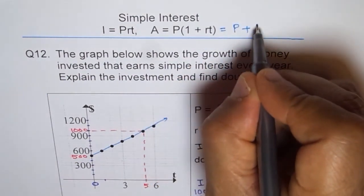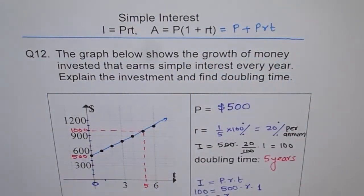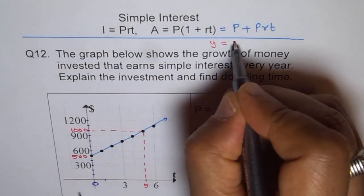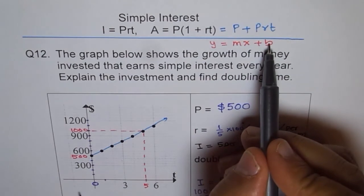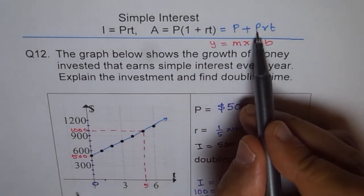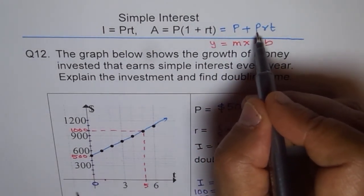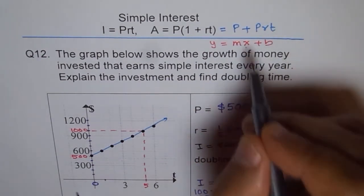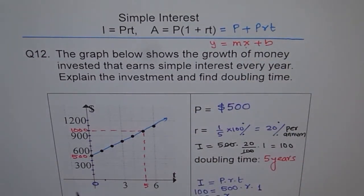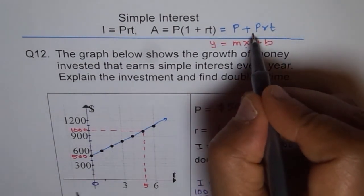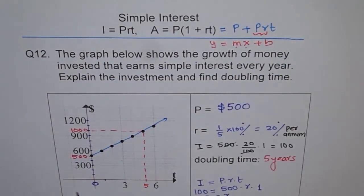Let's expand the amount formula: A = P + PRT. Comparing this with Y = MX + B, the Y-intercept B is the principal P ($500), M (the slope) is P × R (the rate at which the amount increases per year), and T is the variable X. So the slope is 20 percent of the principal.